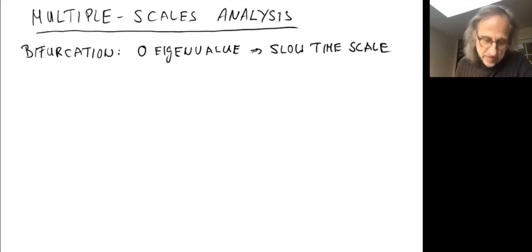Our example is ẋ = μx + xy - γx³ and ẏ = -y + x² - y². At the bifurcation point, μ is zero, and we have a slow timescale.